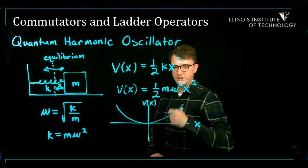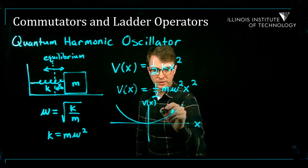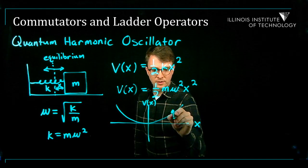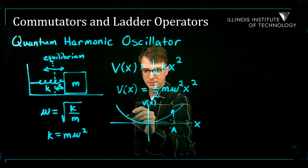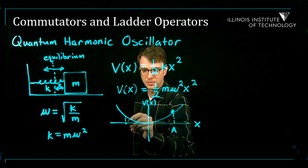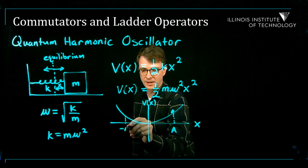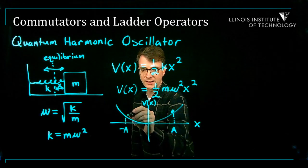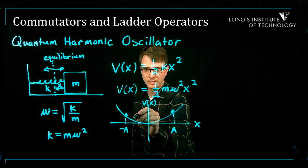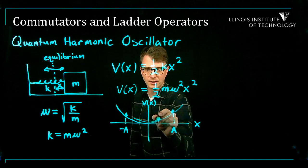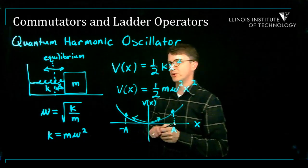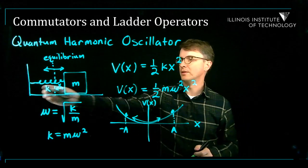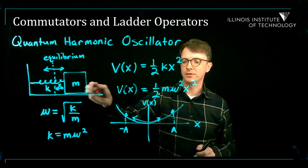Classically, if I had a particle in this potential, it would oscillate back and forth between a and minus a, where a is the amplitude — corresponding to the oscillation of the spring.